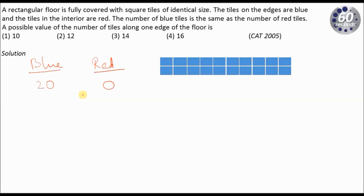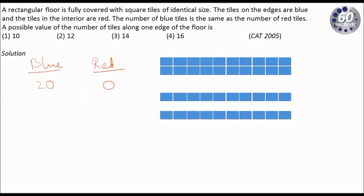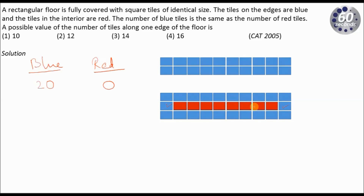Now let me introduce one layer of red tiles in between. This is my one layer of blue tiles on the outside and another layer on the outside, and I introduce one layer of red tiles. When I introduce one layer of red tiles, the number of blue tiles increases by 2 — because of the two additional corner-adjacent tiles. So I will get two additional blue tiles, giving 22 blue tiles. The number of red tiles I get additionally is 8, since there are 10 tiles in one row of which 2 are blue on the edges.